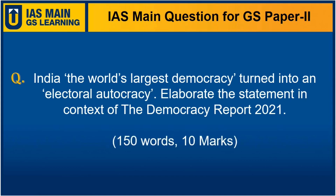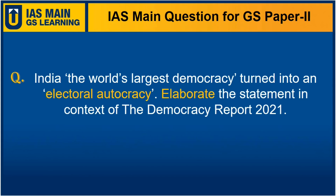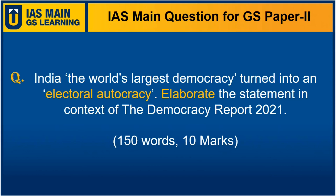This statement itself appeared in the VDEM Institute report of Gutenberg University, Sweden. First of all we have to mark important keywords so that we can focus our answer on those keywords. The first is to understand what is electoral autocracy. The second word is 'elaborate.' You should always check for the question tag. You need to write this question in 150 words and it carries 10 marks.